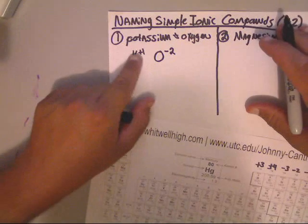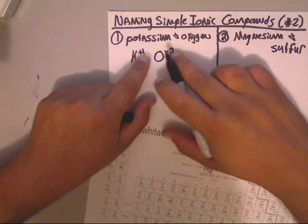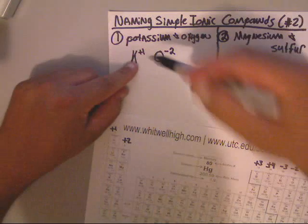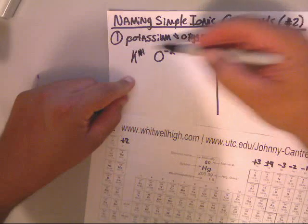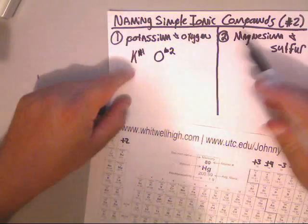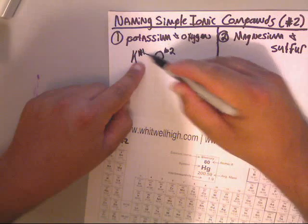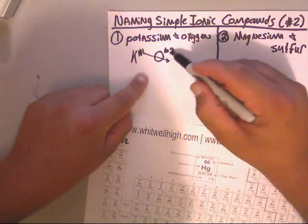Now remember, once you get the plus and the minus down, they're not used anymore as far as writing the formula. So you can ignore the plus, you can ignore the minus. Now remember, you've got to cross these down, okay, just like that.